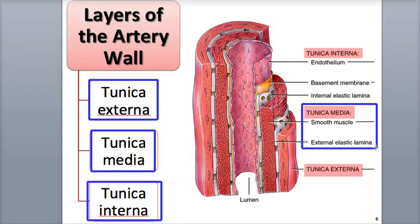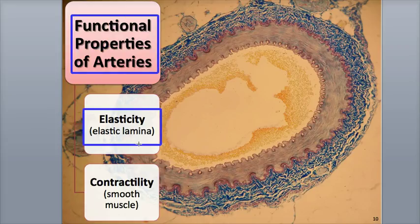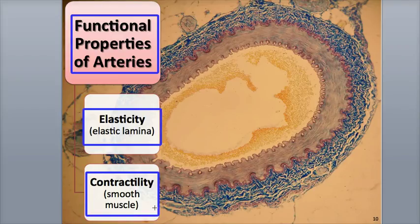Arteries also display a high level of compliance, meaning they can expand or stretch without damage as high-pressure blood passes through them. It is the tunica media that provides arteries with their major functional properties: elasticity through the elastic lamina, which is the ability to stretch and then recoil back to the original diameter, and contractility through smooth muscle fibers, which can contract and decrease the diameter of the vessel.